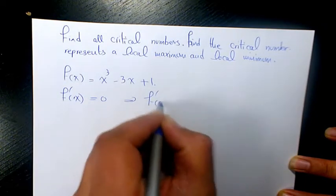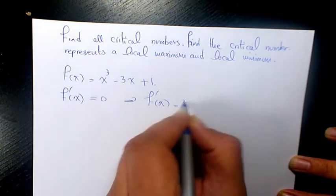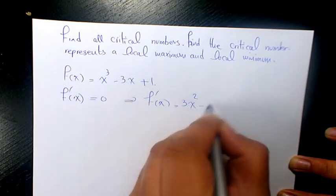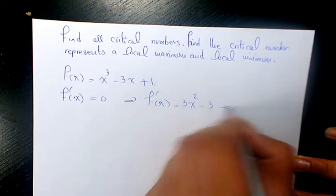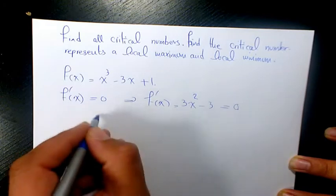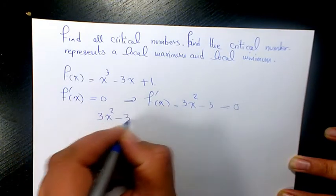So f'(x) is going to be 3x squared minus 3 plus 0, and that has to equal 0. So 3x squared minus 3 equals 0.